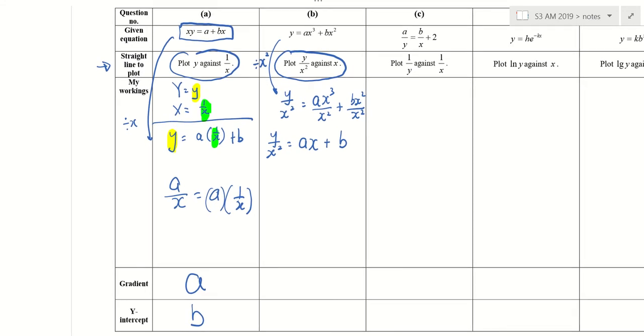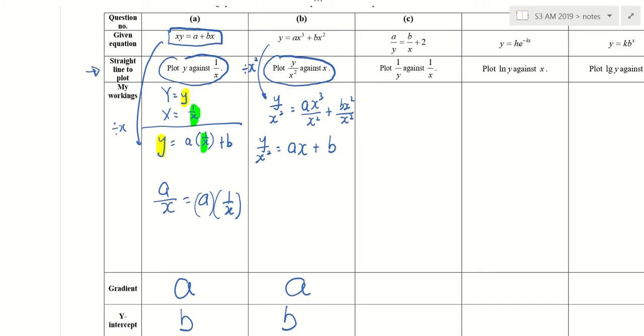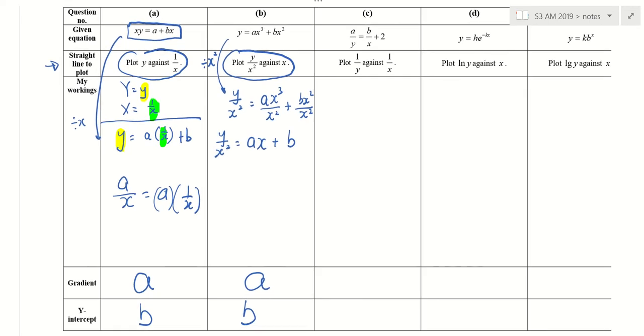So is the answer clear already? What is the gradient? Jun Yang. A. What is the Y-intercept? B. Clear? Done. Can I do C now? Who is unclear about C? Okay, let's try C together.